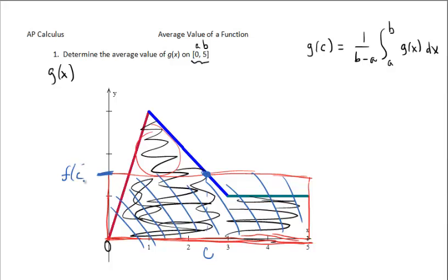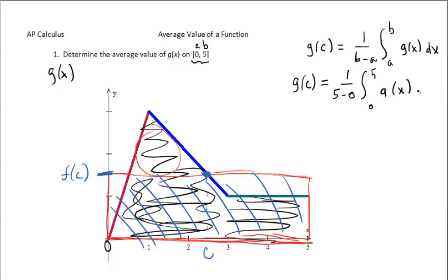The c that gives us that y is f of c — or g of c here. I'm thinking it's going to be 1.5, but we'll see. G of c equals 1 over 5 minus 0, integral from 0 to 5 of g of x dx. So g of c equals 1 over 5 times the integral. Let's find this area.